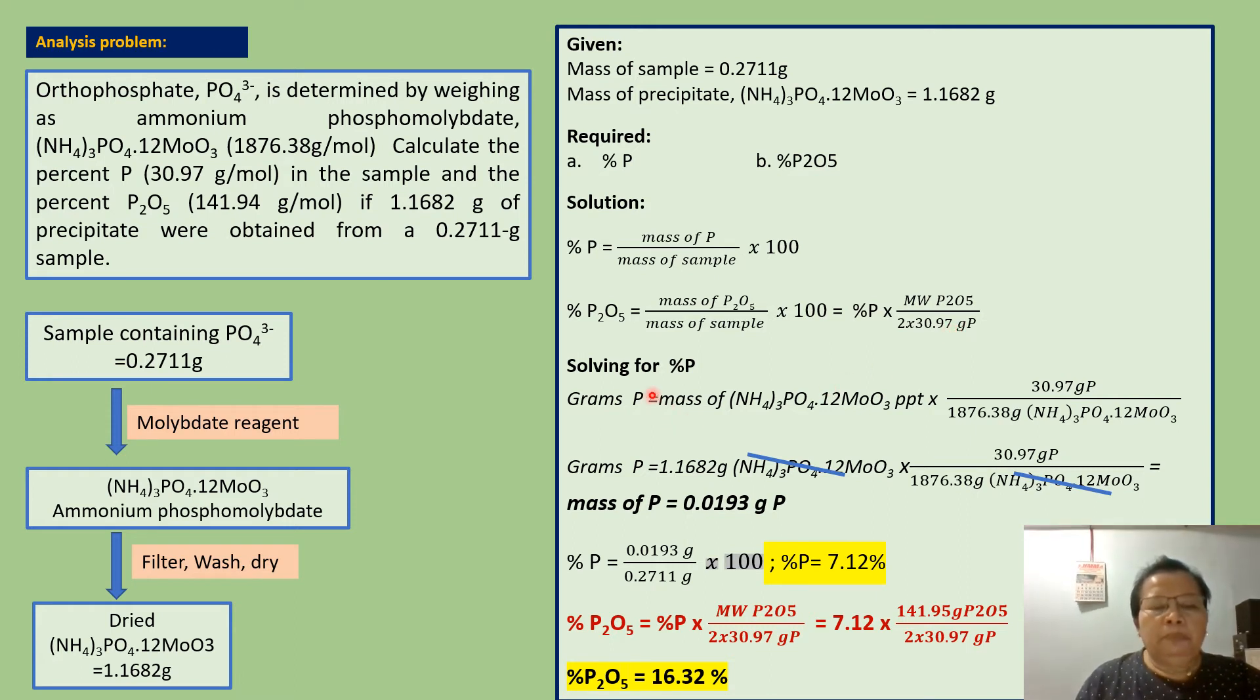Now solving for percent phosphorus, but before that, let me solve first the mass of phosphorus. The mass of phosphorus equals the mass of ammonium phosphomolybdate precipitate times this factor. This factor converts grams of ammonium phosphomolybdate to grams phosphorus.